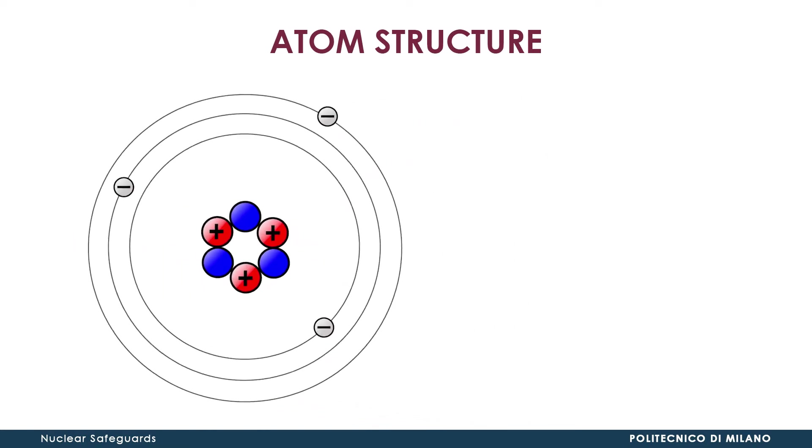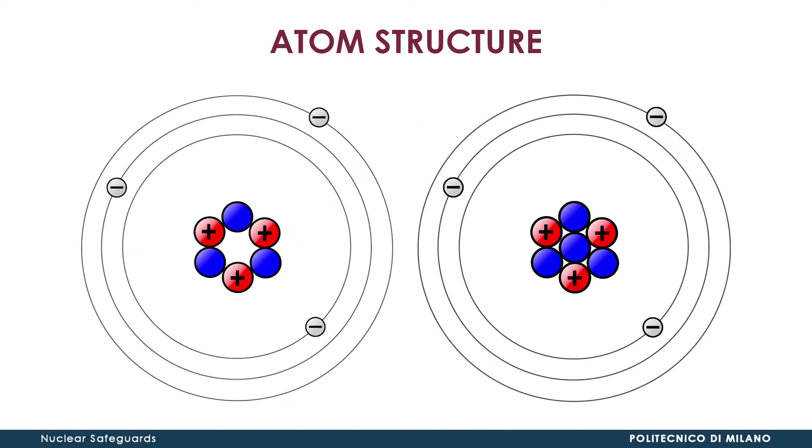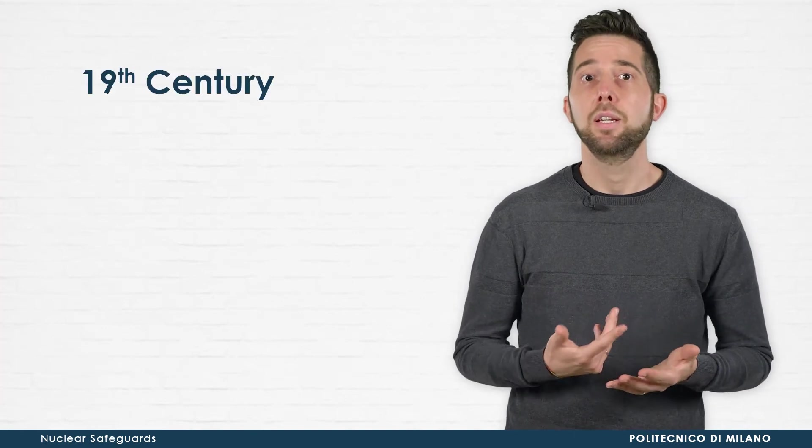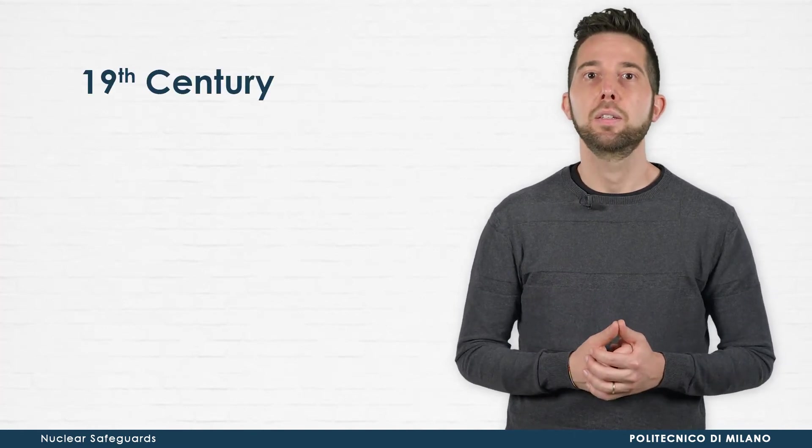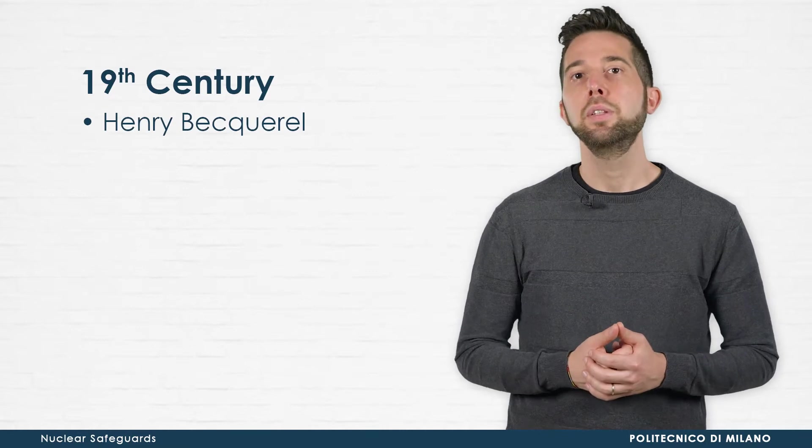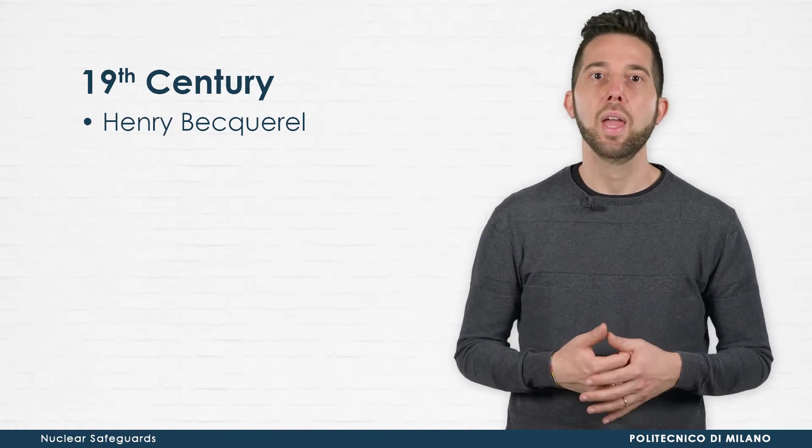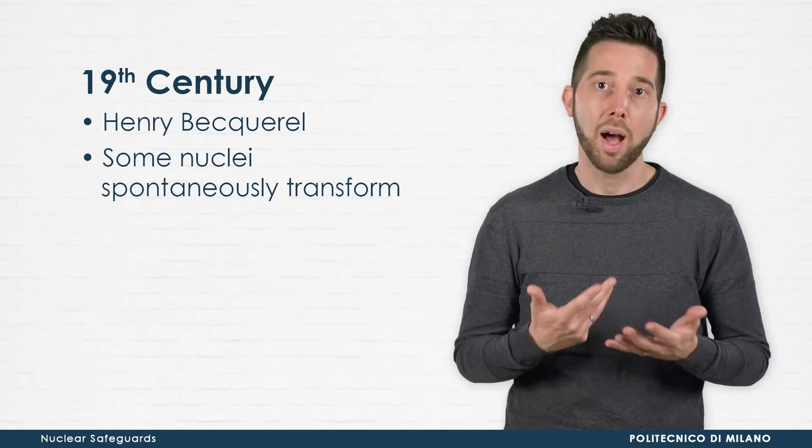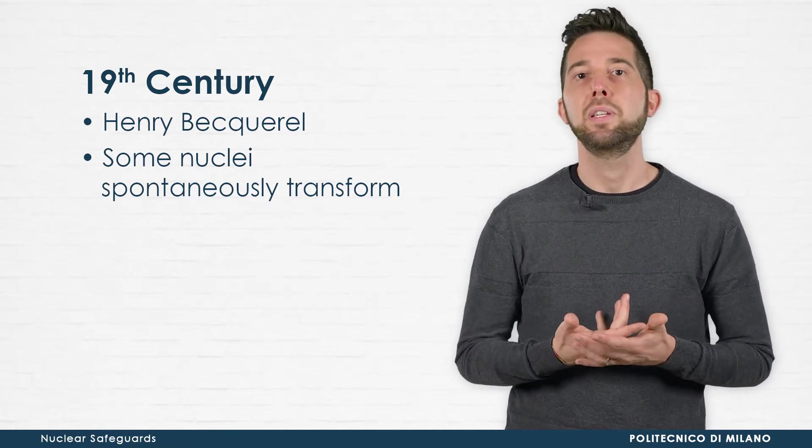Nuclei having same atomic number Z but different mass number A are called isotopes. At the end of the 19th century, the French scientist Henri Becquerel discovered that some nuclei have the tendency to spontaneously transform into other nuclei by emitting particles,